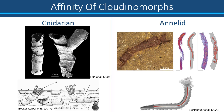There are two main schools of thought regarding the affinity of Cloudinomorphs. The form of branching and the outer structure of Cloudinomorph tubes have been attributed to Cnidaria. However, the nested funnel morphology and the recent findings from Nevada of a cylindrical internal structure, which is inferred to be a gut, indicates an annelid affinity, showing that the debate is still ongoing.